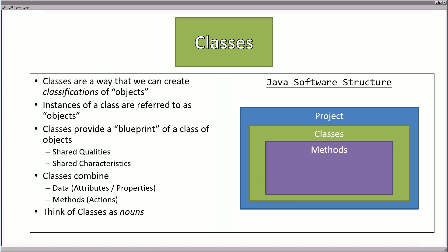Today we begin talking about classes. Classes are a way that we can create classifications of objects. Instances of a class are referred to as an object. The terms classes and objects are generally interchanged, but always think of an object as an instance of a class. Classes provide a blueprint, referring to the shared qualities and characteristics of a given class of objects. In programming, classes combine data — referred to as attributes or properties — along with methods, which are the actions. Classes can be thought of as nouns, and methods are verbs that must be grouped inside of classes.